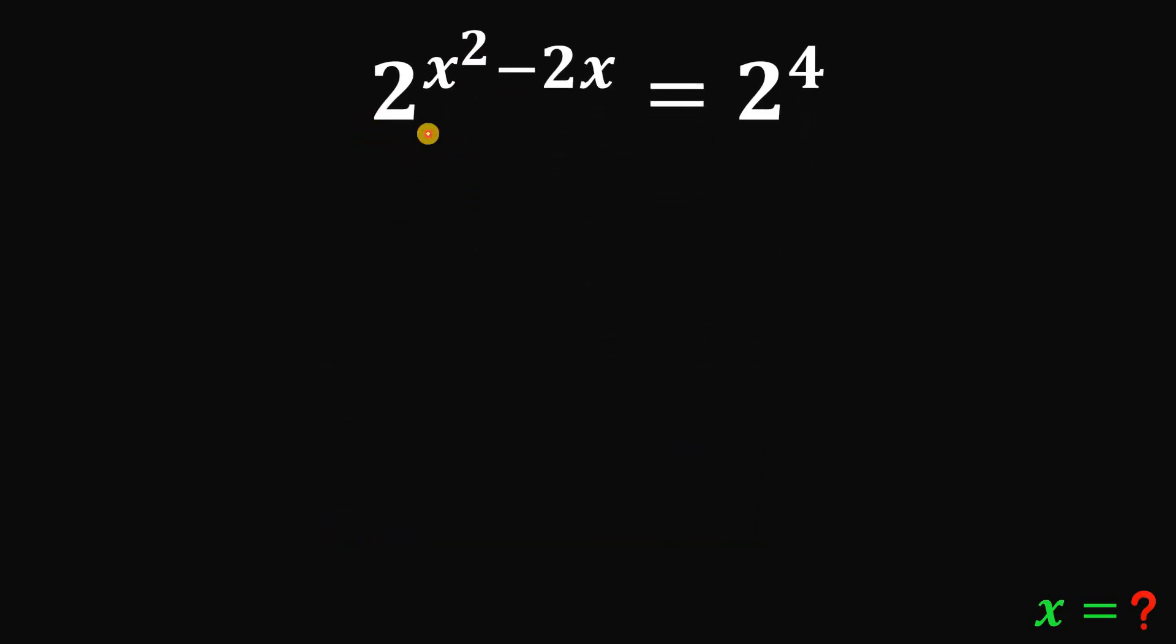And then, since we have equal expression on the right hand side and the left hand side, and we have the same base, therefore, we can say that their exponents are equal. So, we have x squared minus 2x equals 4.